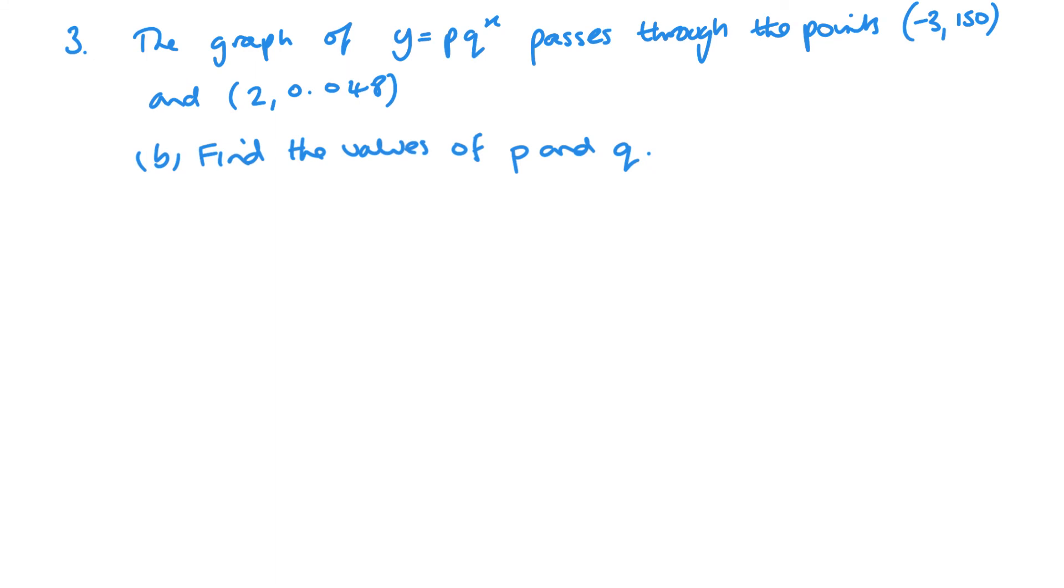Part b is very similar to the last question. We just need to substitute our values in, so we have 150 equals pq to the minus 3, and we've got 0.048 equals pq to the power 2. Again, we're just going to do one equation divided by the other. I'm going to start with 0.048 equals pq squared, and I'm going to divide that by my other equation like so.